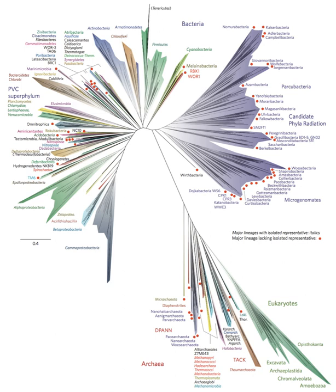The Tree of Life or Universal Tree of Life is a metaphor, model and research tool used to explore the evolution of life and describe the relationships between organisms, both living and extinct, as described in a famous passage in Charles Darwin's On the Origin of Species.